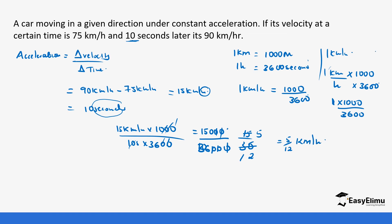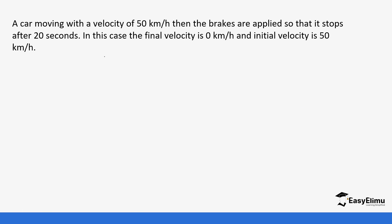Let's look at another question. A car is moving with a velocity of 50 kilometers per hour, then the brakes are applied so that it stops after 20 seconds. So velocity 1 is 50 km/h, time is 20 seconds, and the final velocity — velocity 2 — is 0 kilometers per hour, because that's when it came to a stop.